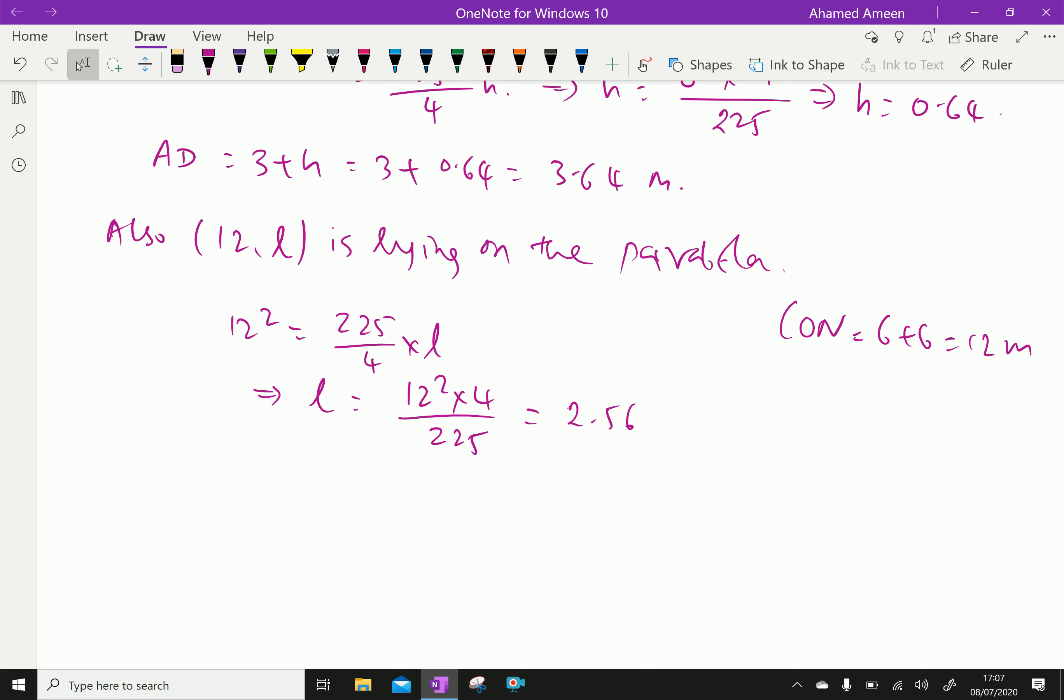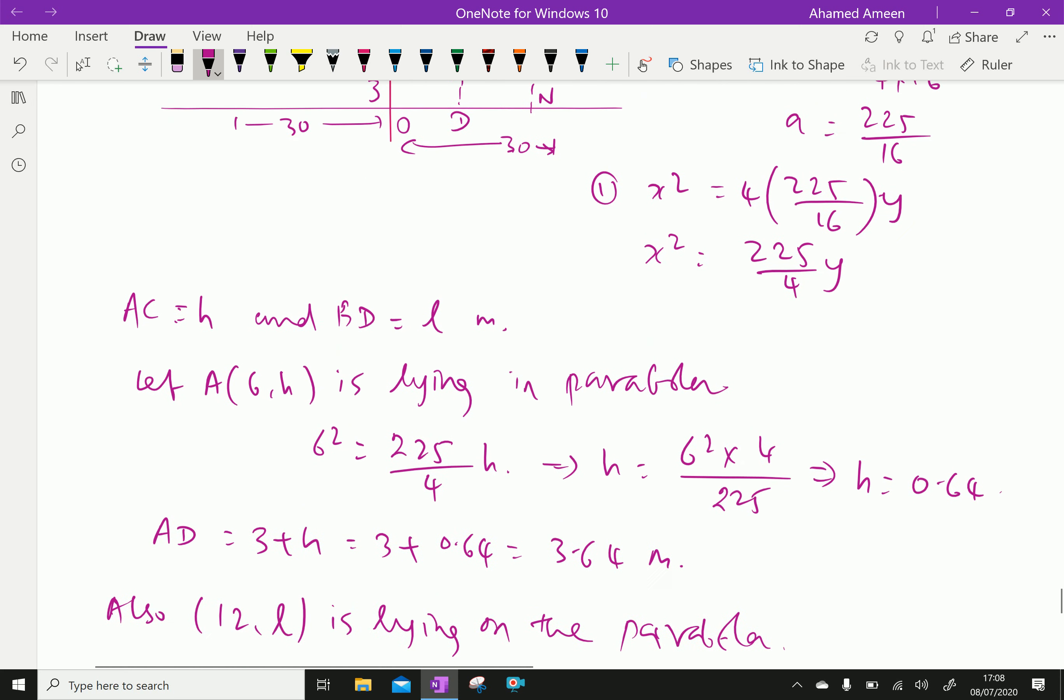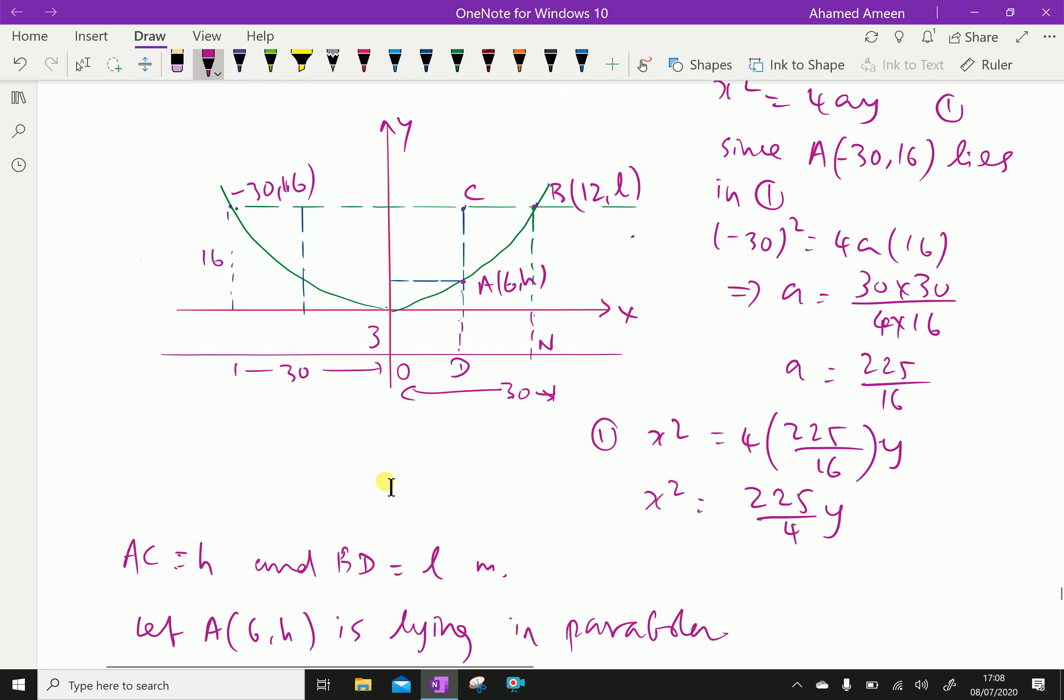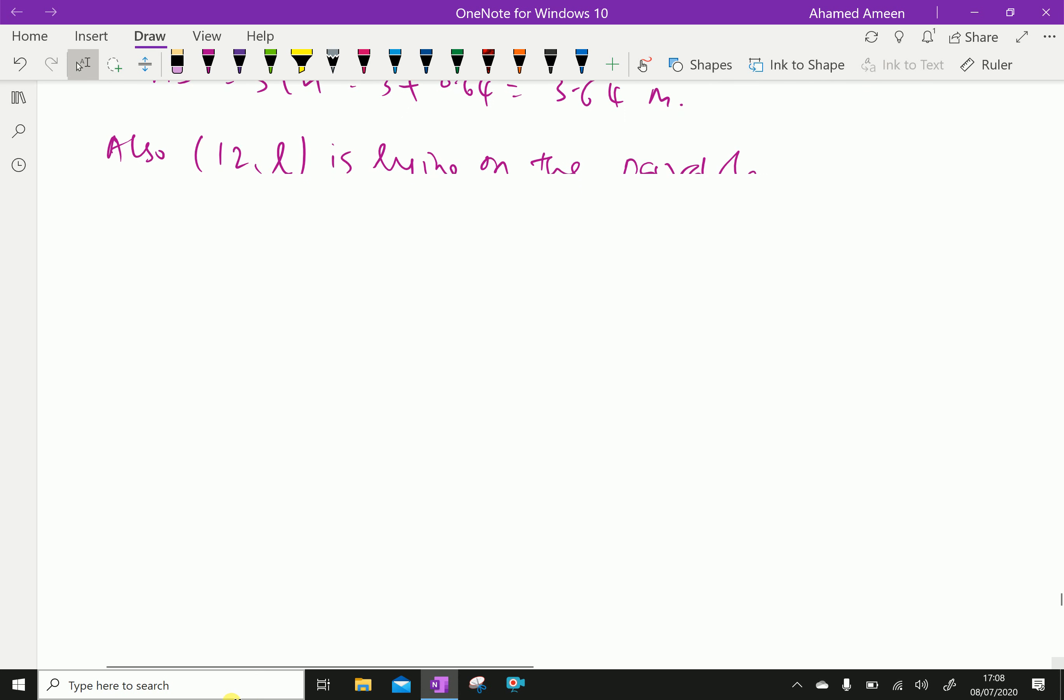Therefore we can say BN equal to 3 plus l, that is 3 plus 2.56 equal to 5.56 meter. Therefore BN is from here to here, that is 5.56.